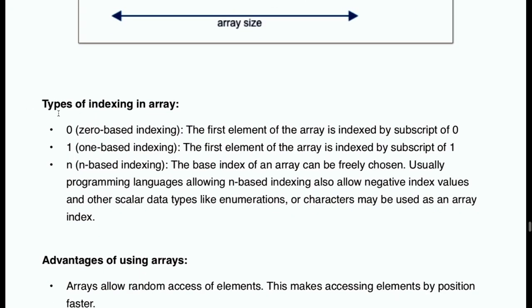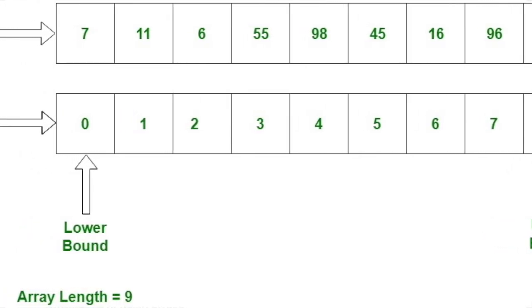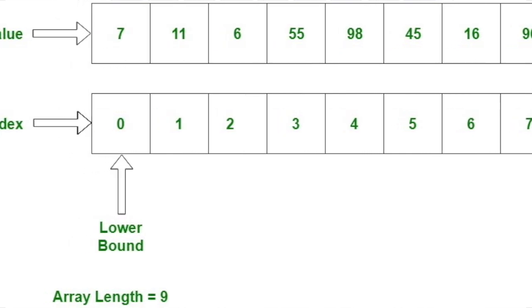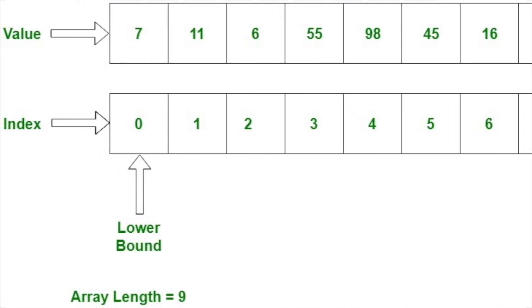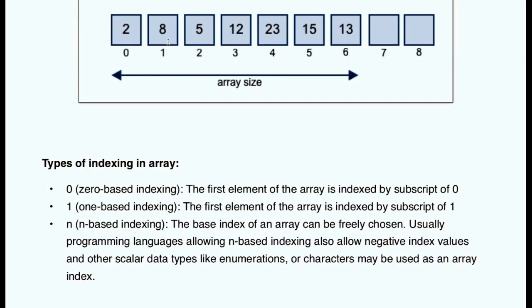Now this is type of indexing in array. 0-based indexing: the first element of array is indexed by subscript of 0. 1-based indexing: the first element of the array is indexed by subscript of 1. And n-based indexing like enumerations or characters may be used as an array index.